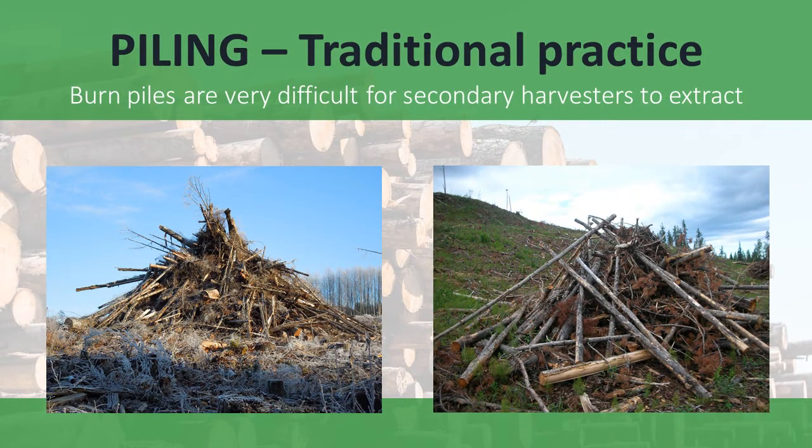The traditional practice of primary harvesters is to build residue piles that facilitate burning. These are often in a haystack or cone shape, or in some cases a long windrow if enough residue is present. In the fall, when fire conditions are optimal, the piles are then often burned. The smoke created from burning these piles can sometimes be problematic if venting conditions become poor during the burn. In the creation of burn piles, the individual residue pieces get very tangled and are difficult to handle by secondary harvesters.